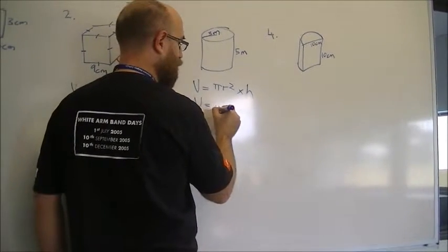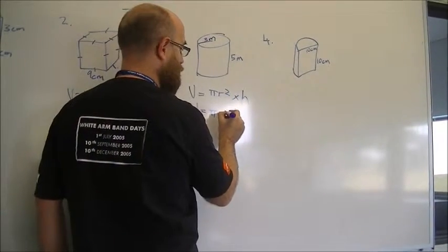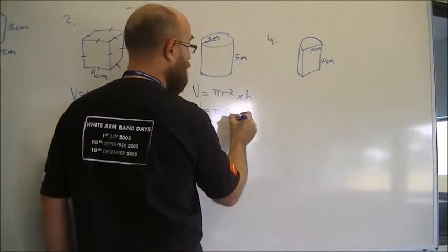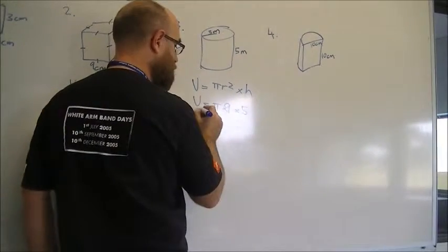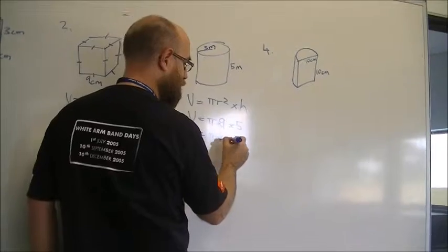So, V equals pi, 9 times 9 times 5. 9 times 5 is 45.